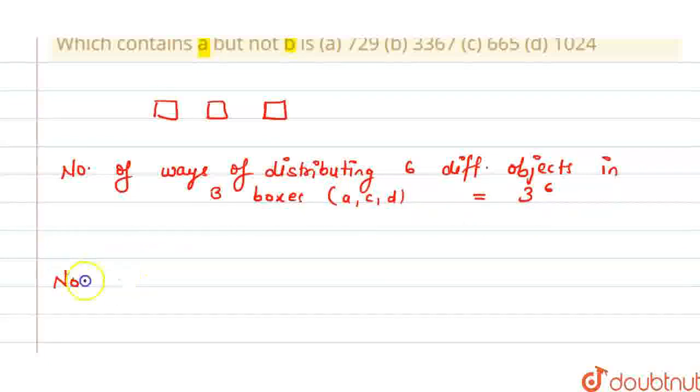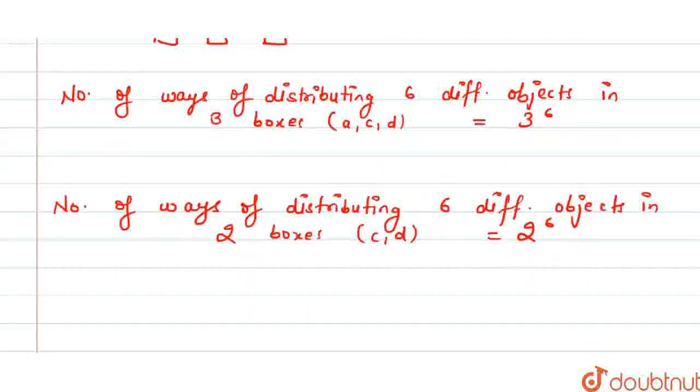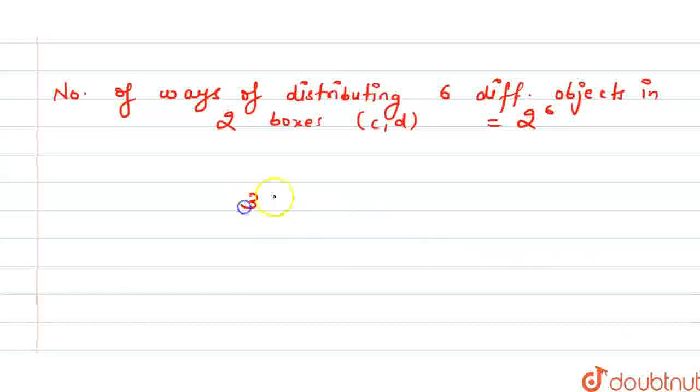So, the number of ways of distributing six different objects in two boxes. Boxes are C and D only. So, this will be two raised to the power six and the required number will be three raised to the power six minus two raised to the power six.